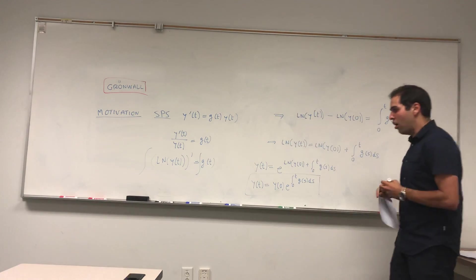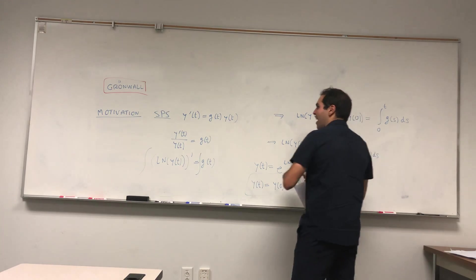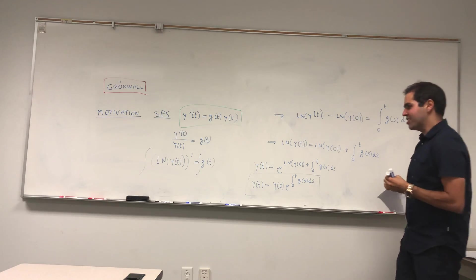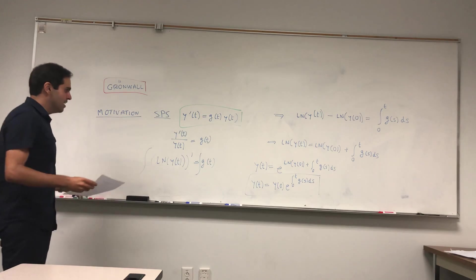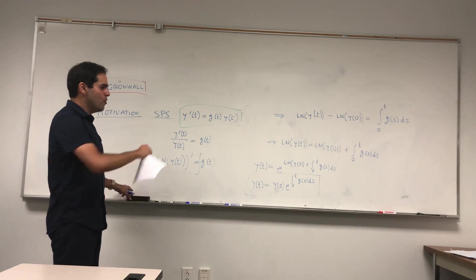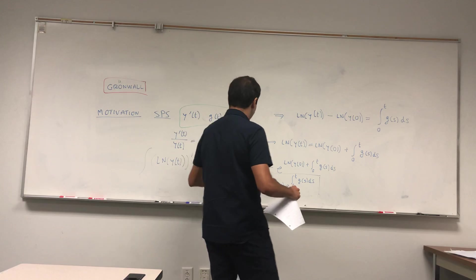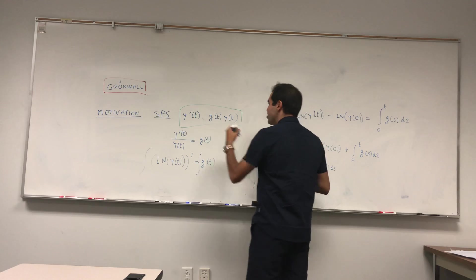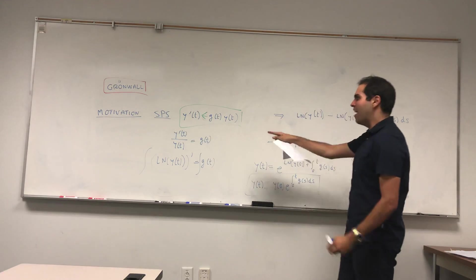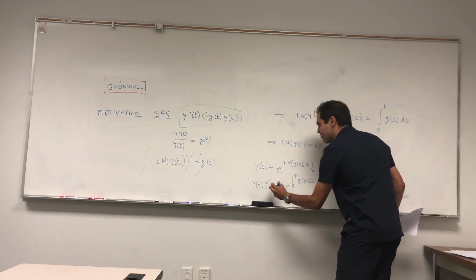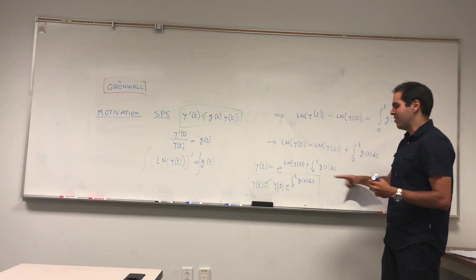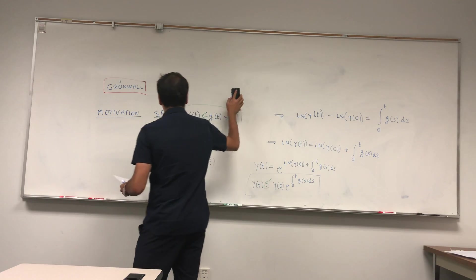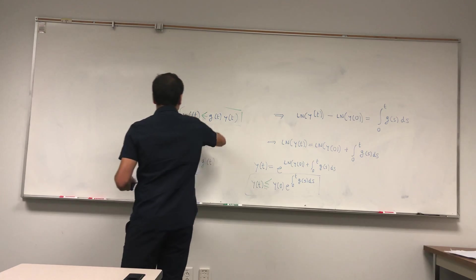The cool thing about Gronwall's inequality is that we can do the same thing but with inequalities. If y satisfies a differential inequality — if y'(t) ≤ g(t)·y(t) — then y(t) ≤ y(0)·e^(∫₀ᵗ g(s) ds). Let me now state and prove this.